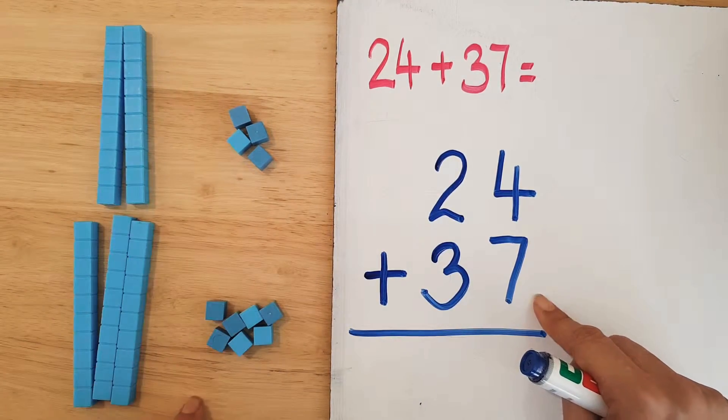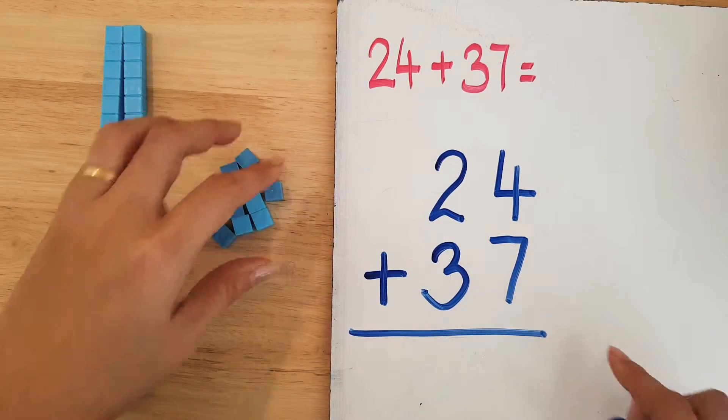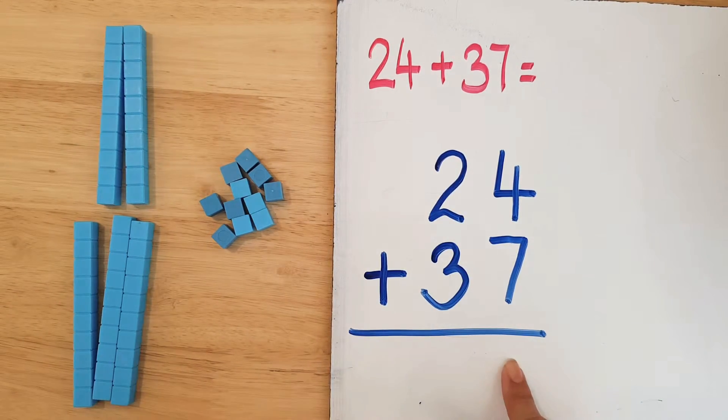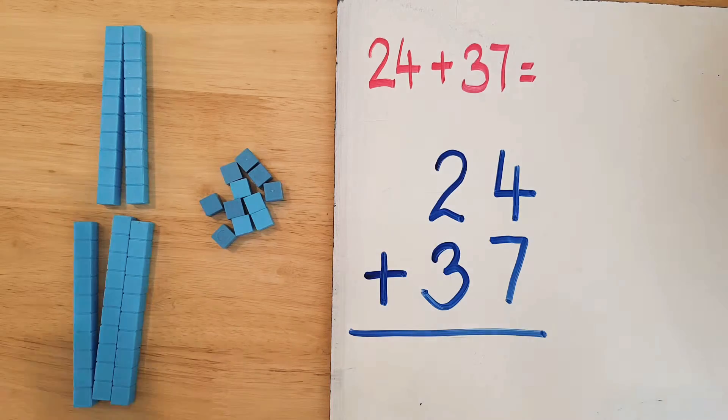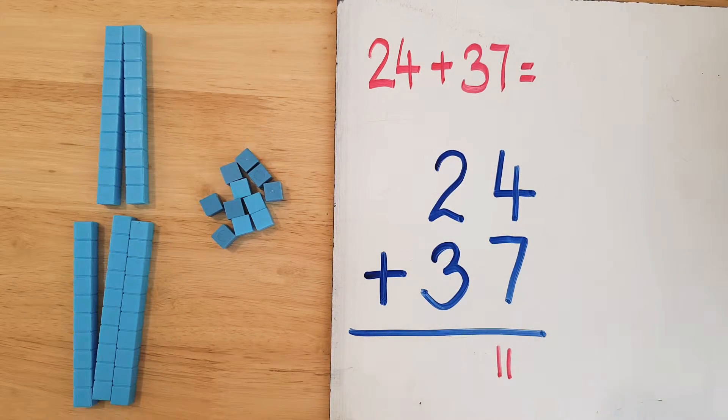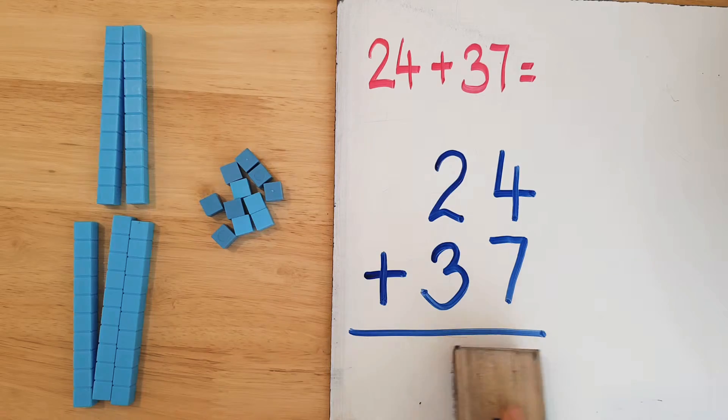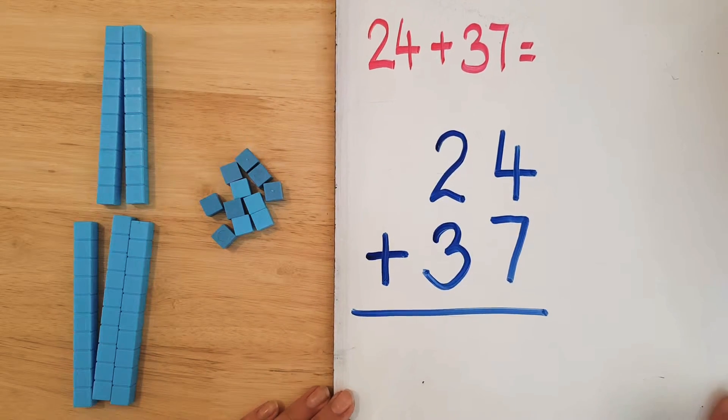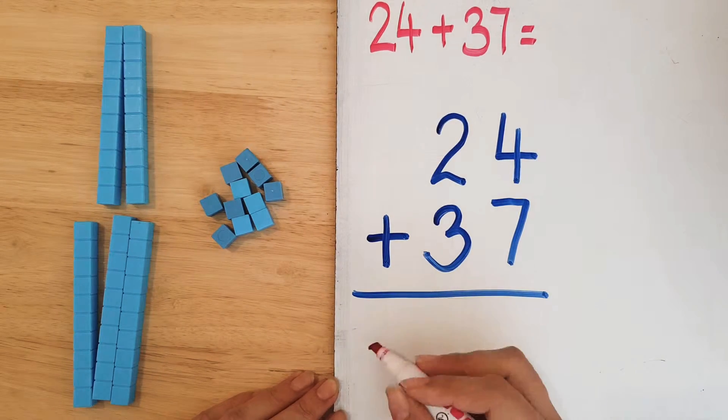Four plus seven gives me 11 ones. Now can I write 11 here like that? No I can't, because there's more than 10. Ten or more, I'm going to regroup. So how do I regroup? Let me write it down here for you.